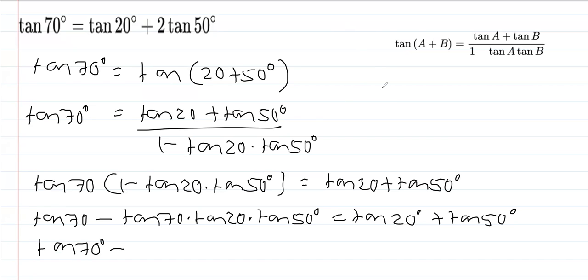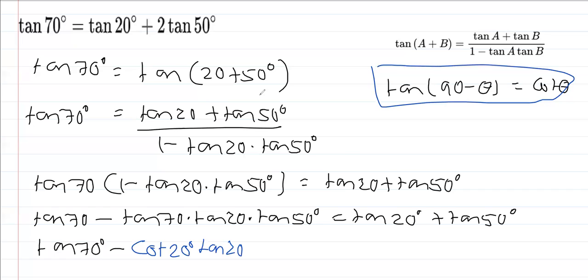I know that tan(90° - θ) is cot θ. So I can write tan 70° as cot 20° from this property, and this tan 20° is copied. The rest is as it is: tan 50°, tan 20° plus tan 50°.